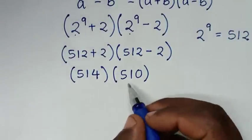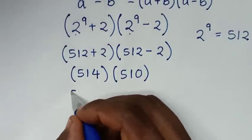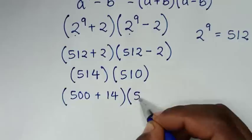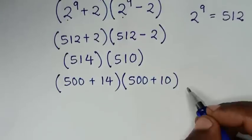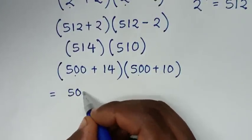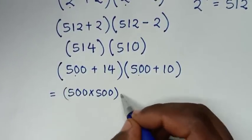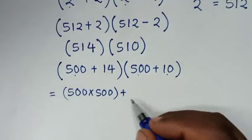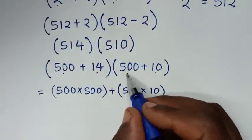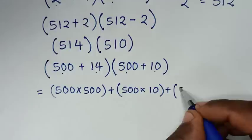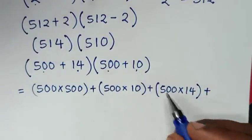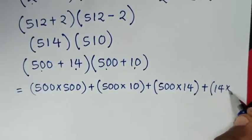So from here, 500 is common. So 514 is the same as (500 plus 14), and 510 is the same as (500 plus 10). Then expanding: 500 times 500, plus 500 times 10, plus 14 times 500, plus 14 times 10.